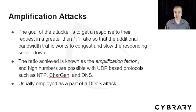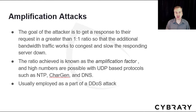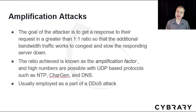Another attack methodology is the amplification attack. The goal of the attacker is to get the response-to-request ratio greater than 1-to-1. Additional bandwidth traffic congests and slows the responding server down. The ratio achieved is known as the amplification factor, and high numbers are possible with UDP-based protocols such as NTP, Chargen, and DNS. It's usually employed as part of a DDoS attack.